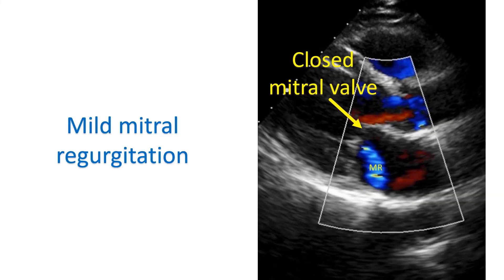Stenosis of the valves can be made out by the reduced opening at the time when it is supposed to be open. There will be associated thickening of the valve as well. Doppler echocardiography will show a high velocity mosaic jet across the stenosed valve.